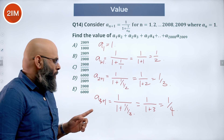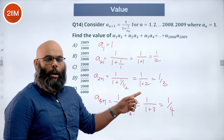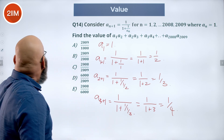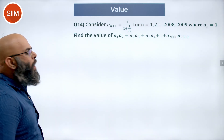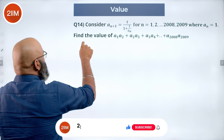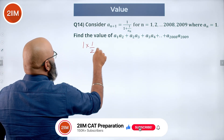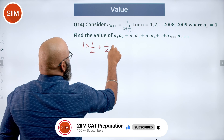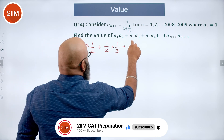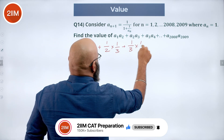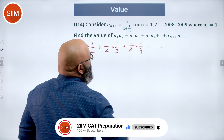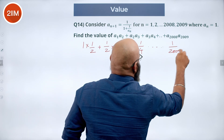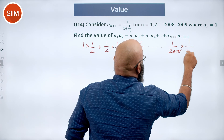So a(n) = 1/n for all n. In that case, the sum a(1)·a(2) + a(2)·a(3) + ... becomes: 1·(1/2) + (1/2)·(1/3) + (1/3)·(1/4) + ... + (1/2008)·(1/2009).